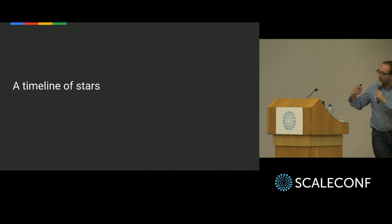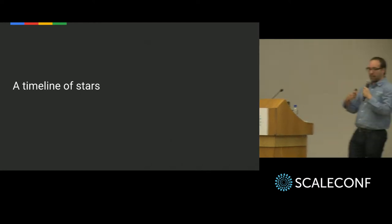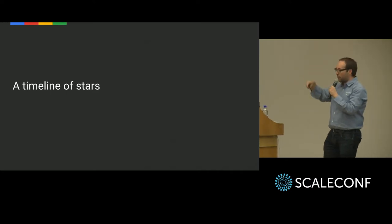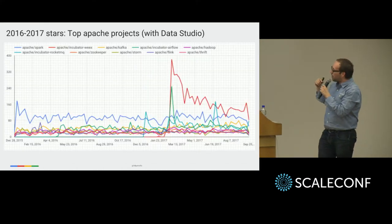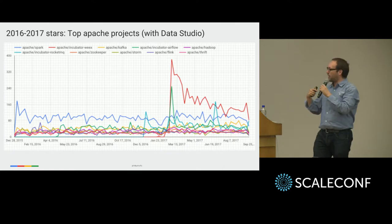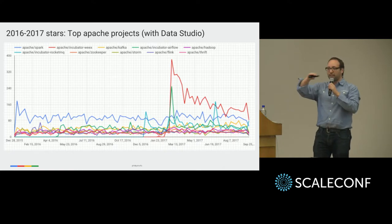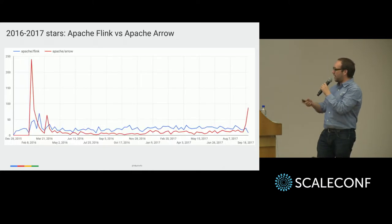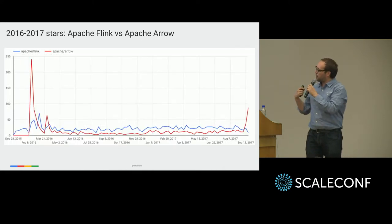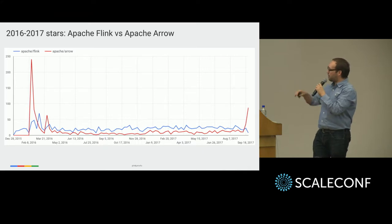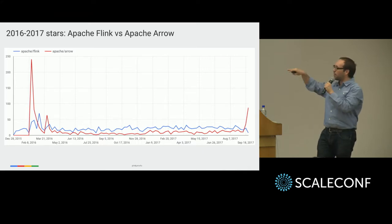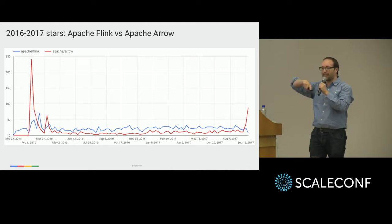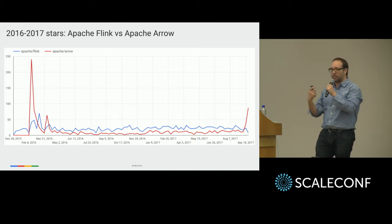When people give stars, there is a timeline — people don't give stars every day, you don't get a uniform rate of stars. For example, these are the top Apache projects and how many stars they get. Some are very stable. Here I'm comparing Flink versus Arrow — Flink had a very stable 2017, while Arrow got a lot of stars every time that Wes McKinney wrote a blog post.